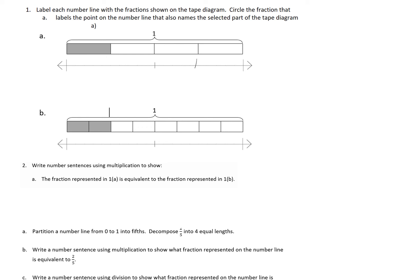So if we chunk this direction to better understand it, label each number line with the fraction shown on the tape diagram. The tape diagram shows 1 fourth. So now I have to label the number line. I know I'm working in fourths, so this first one is 0 fourths, halfway would be 2 fourths, and at the end to represent one whole would be 4 fourths.